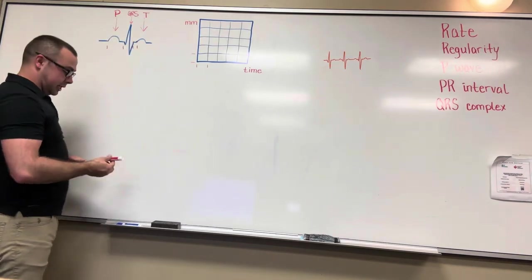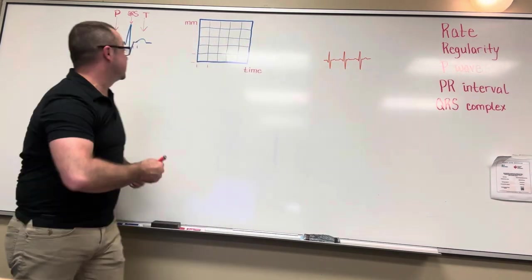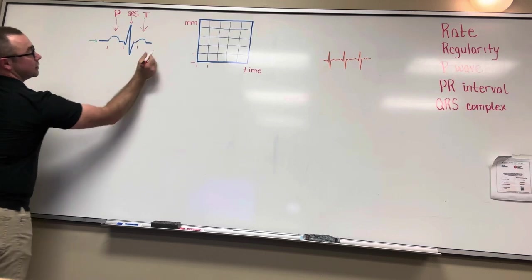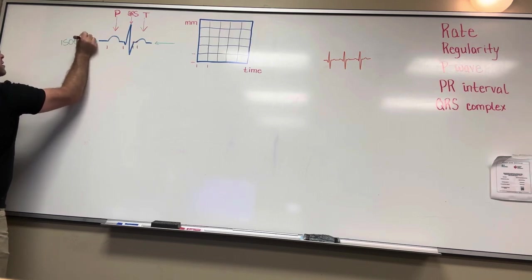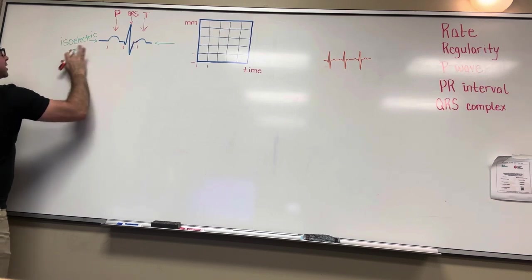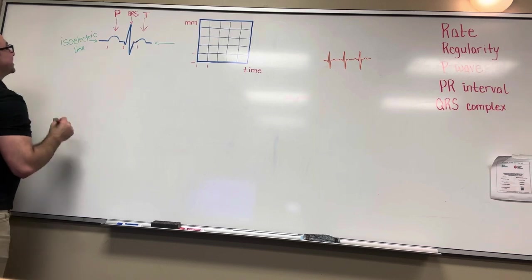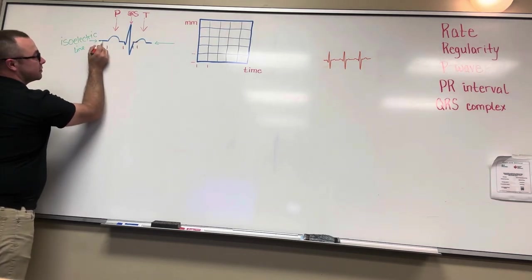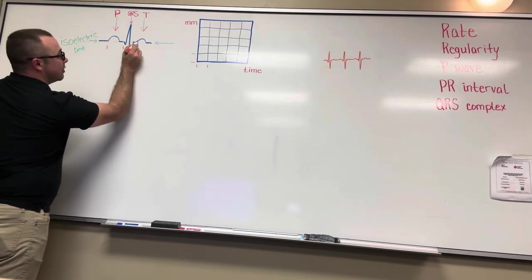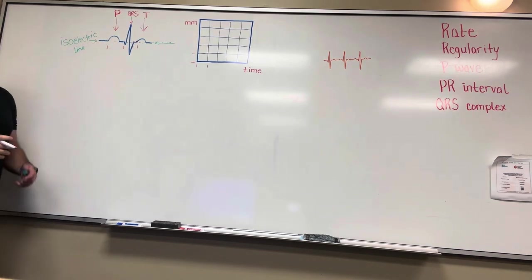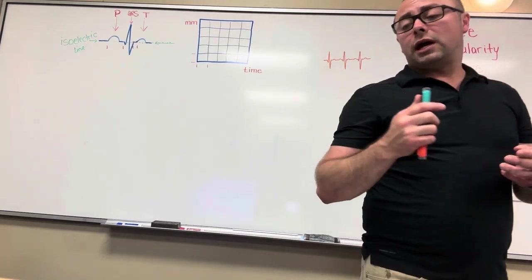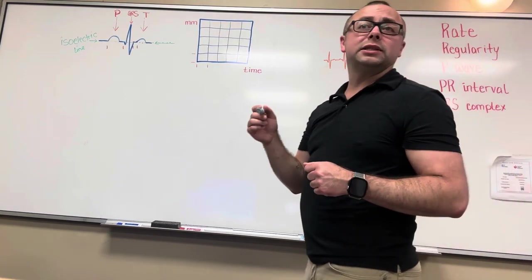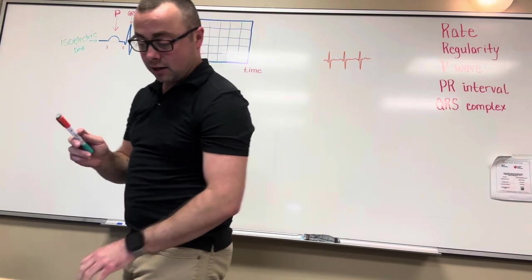There is a thing called the isoelectric line. This isoelectric line is the baseline that you see right here — it's not just the flat part, it goes all the way across. The isoelectric line is just the baseline. That's what we're looking for when checking the ST segment. We want to compare it to that isoelectric line — how far above it is it, or how far below it is it.